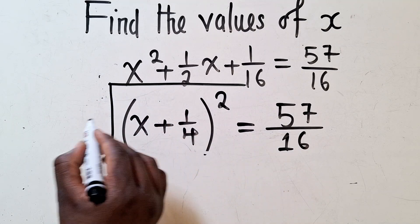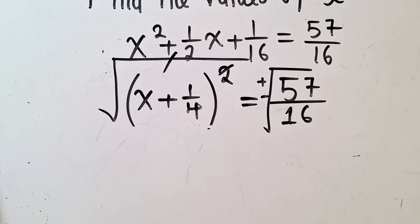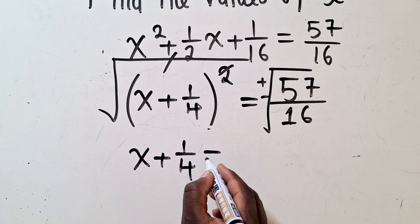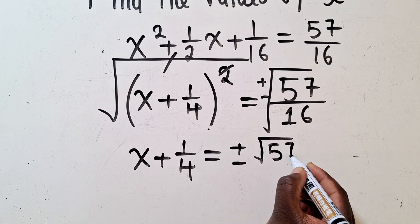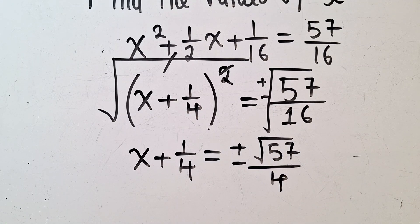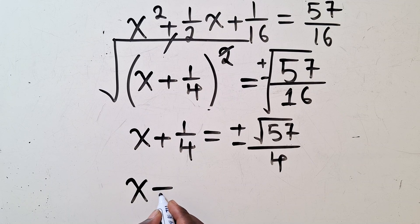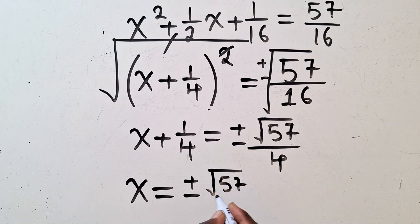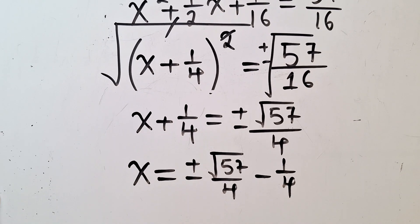You square root both sides because you want to get rid of the power 2. So this and this will go. We shall have x plus 1 over 4 is equal to plus or minus square root of 57 over 4. Square root of 16 is 4. And then we can say x is equal to positive or negative square root of 57 over 4 minus 1 over 4. So we can form two equations.